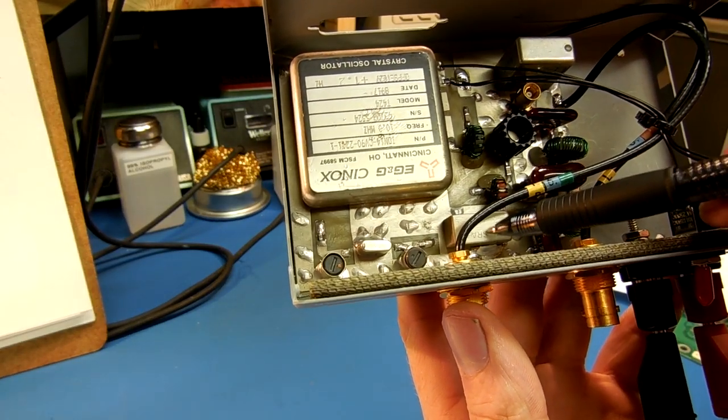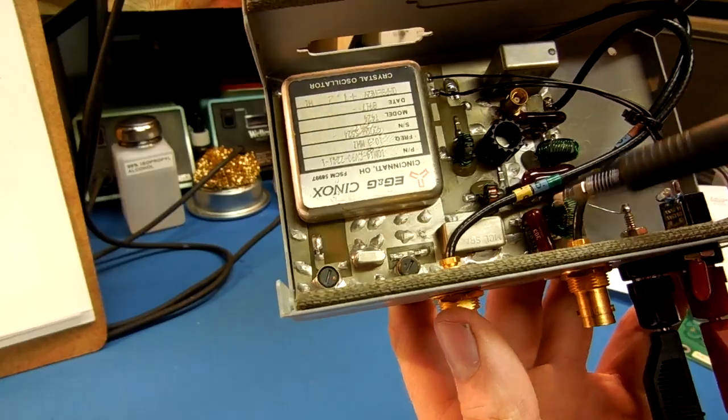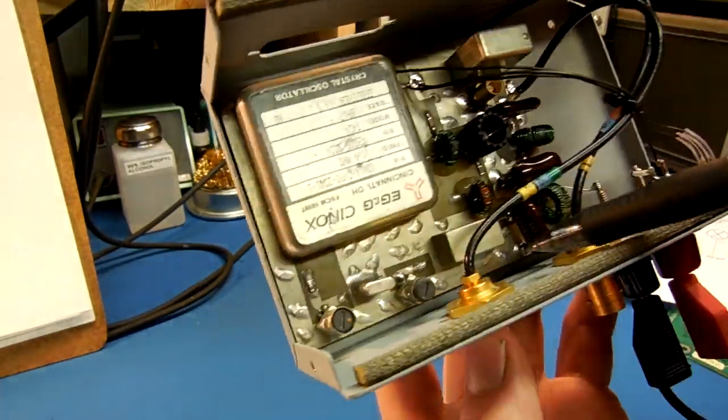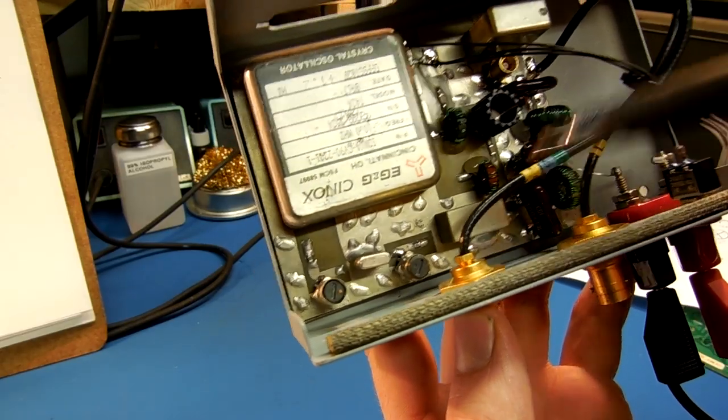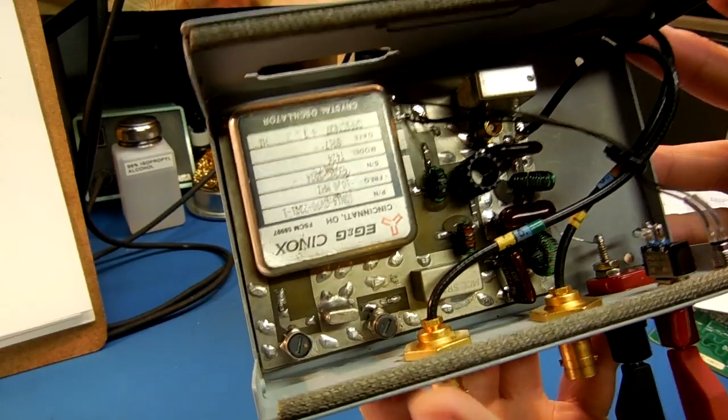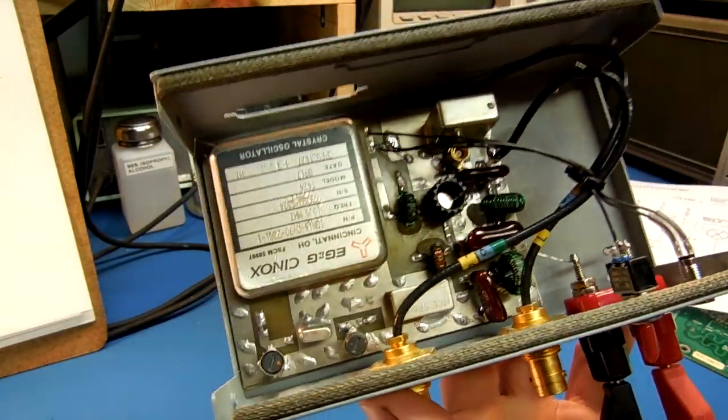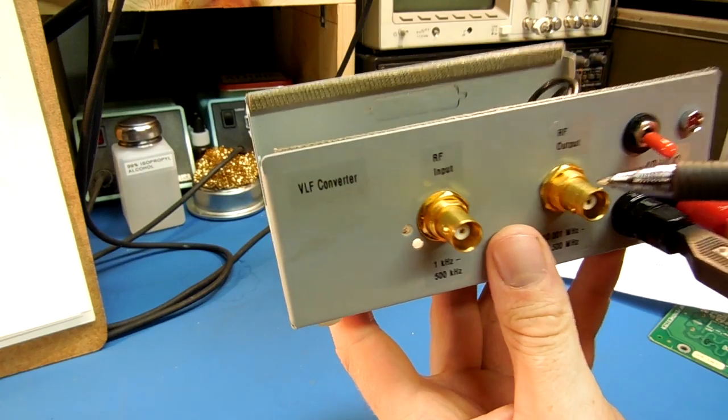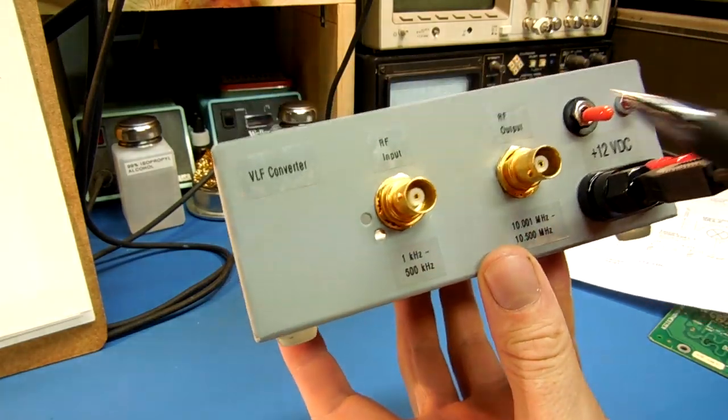Here's the SRA, SRA-8 mixer itself. I soldered it directly to the board. We don't want any leakage or anything. For the RF, the actual RF input and the RF output, I got some nice little panel mount BNC connectors.